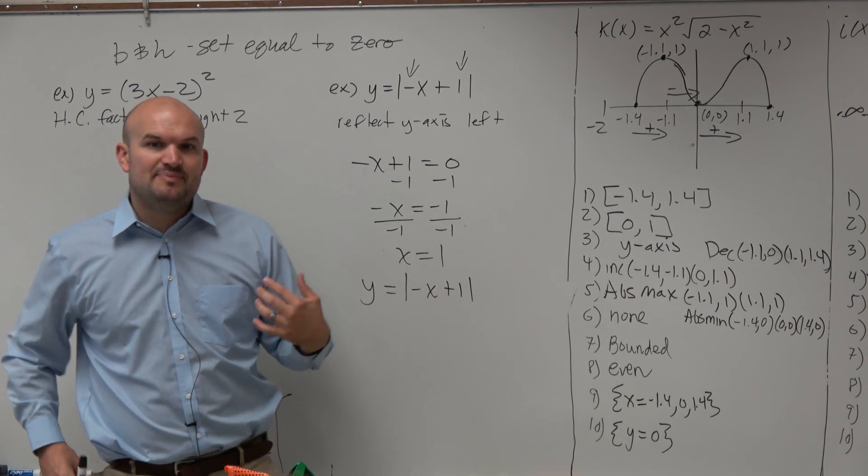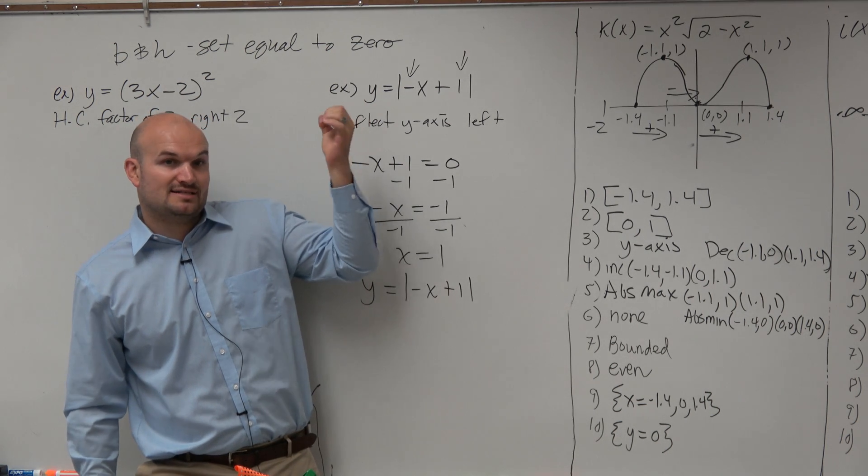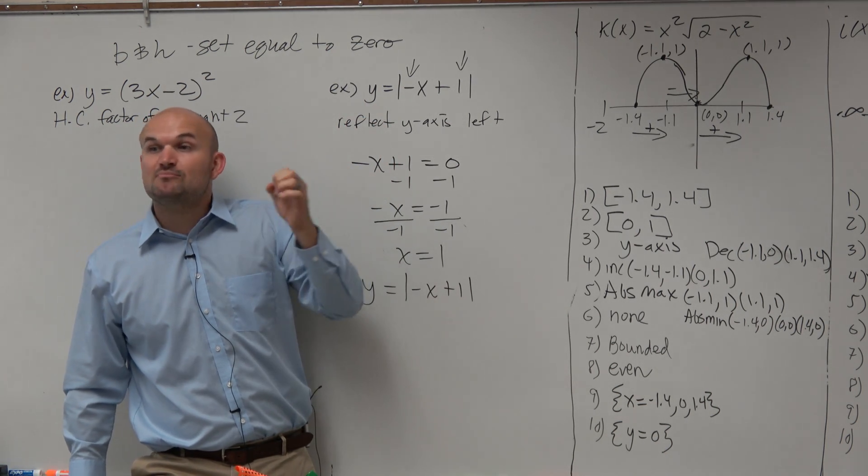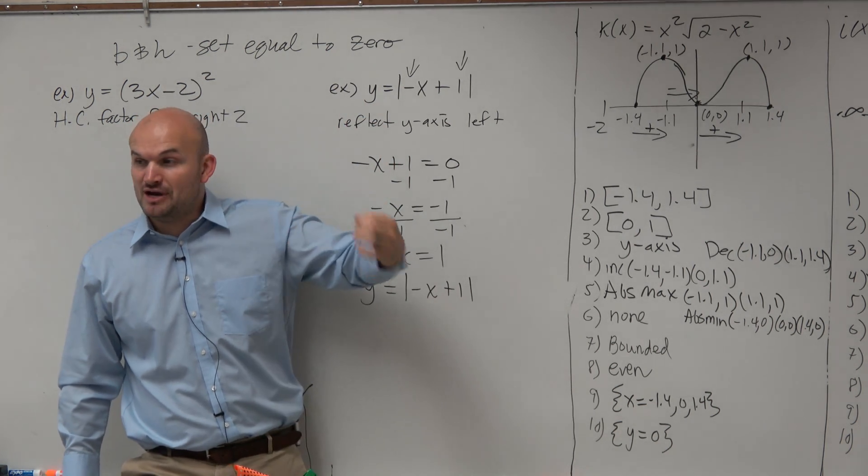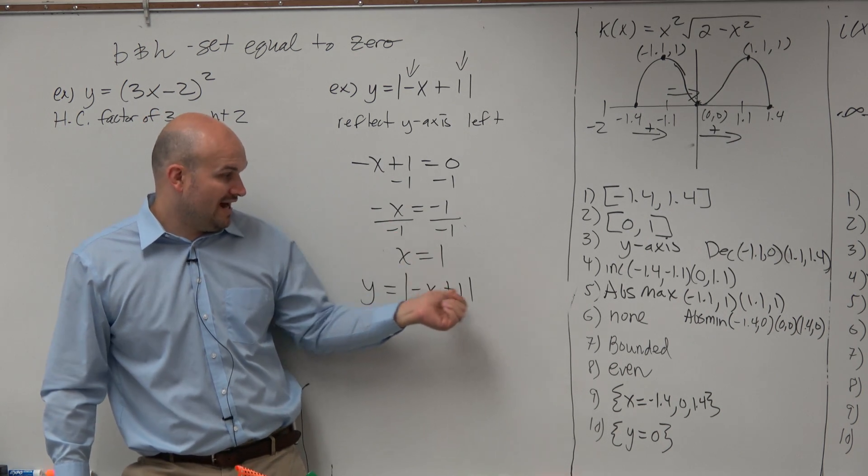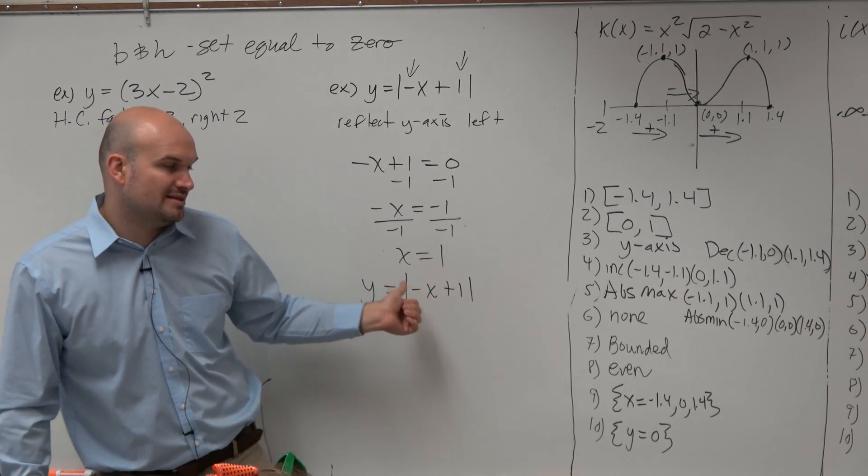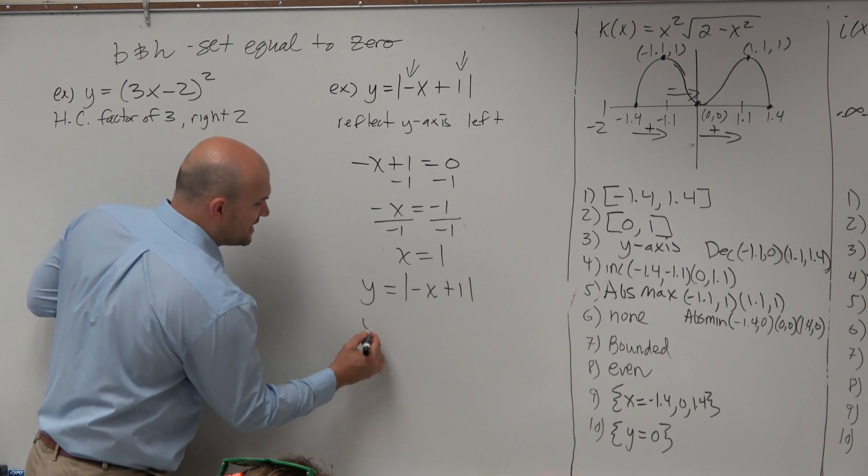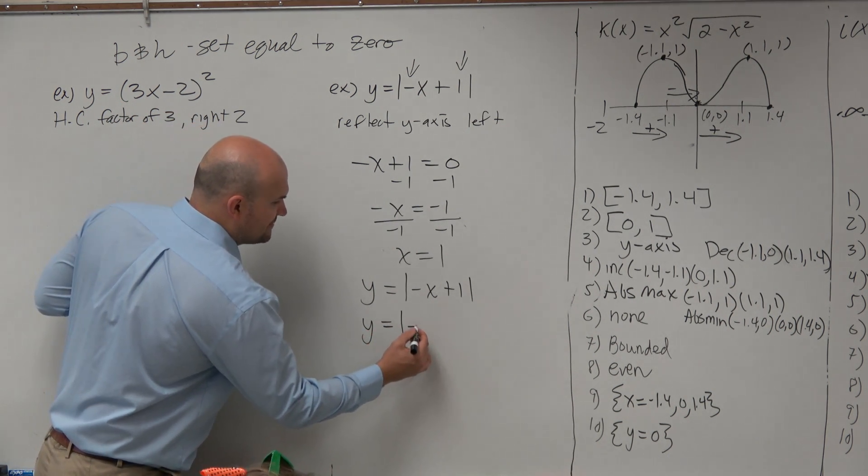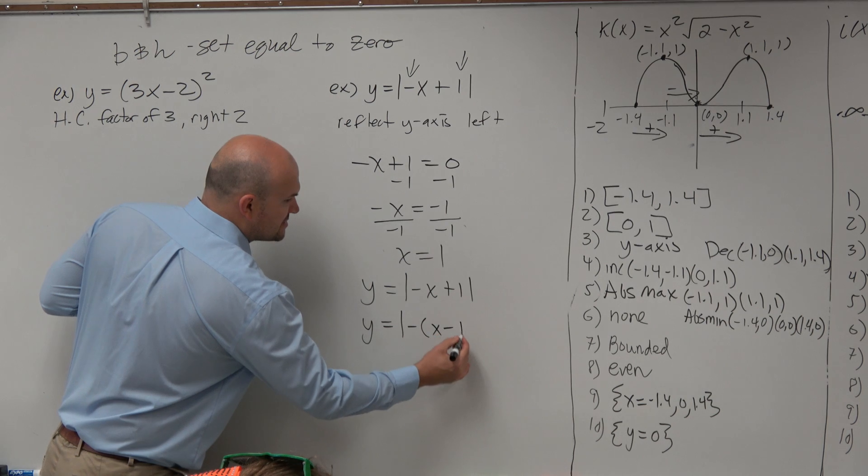What I'm telling you is b, since b is a product, it's a multiplier, b is multiplied by your x and your h. So if you have this b here and an h, what you have to do is factor out the b. So if you factor out a negative 1 here, what you're left with is x minus 1.